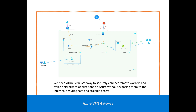Here we are going to add or create a new subnet dedicated for Azure VPN Gateway, and later we are going to see this setup step by step — how to do it and how we are going to connect from a machine to the virtual machine using private IP access. This virtual machine has only a private IP.